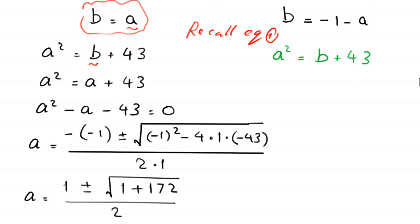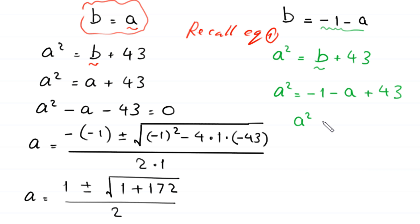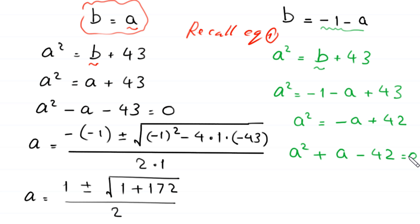Now we solve the second case. In equation 1, we replace b with negative 1 minus a, so a squared equals negative 1 minus a plus 43. This simplifies to a squared equals negative a plus 42. Moving terms to the left hand side gives a squared plus a minus 42 equals 0. This quadratic equation is factorable; we split the middle term as plus 7a minus 6a.